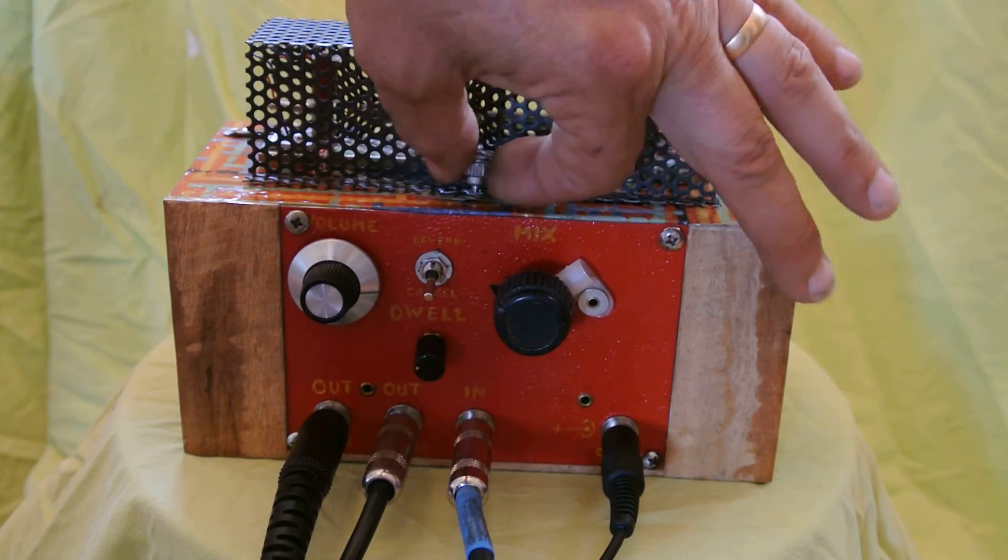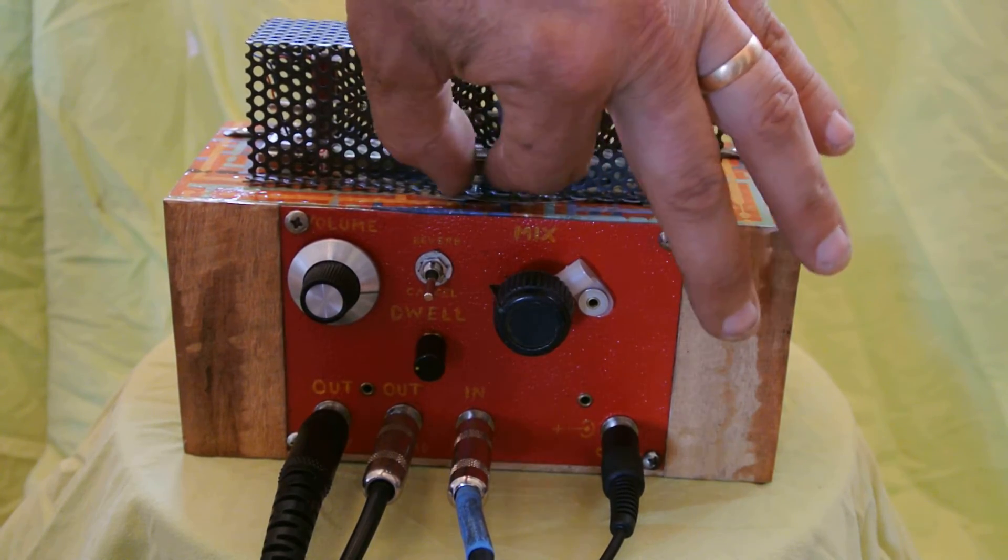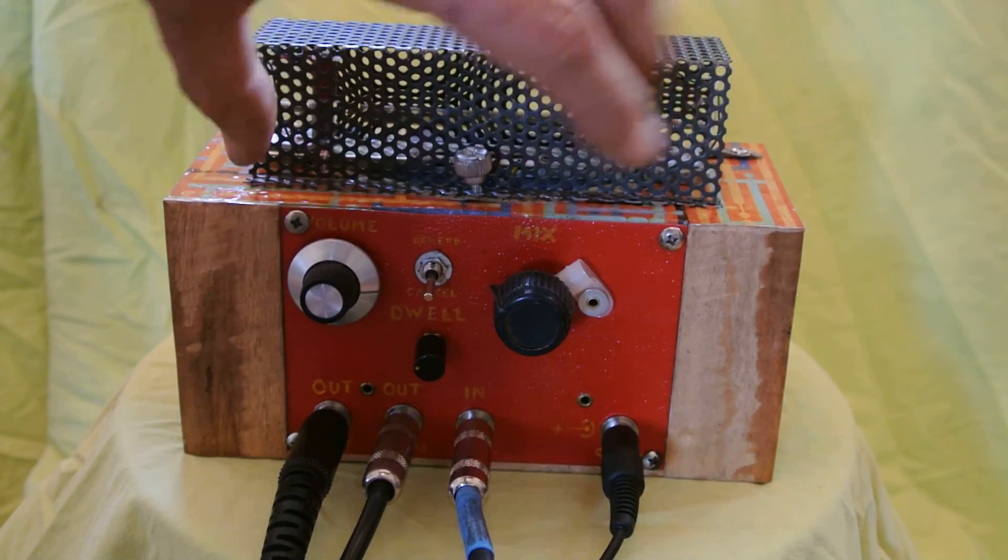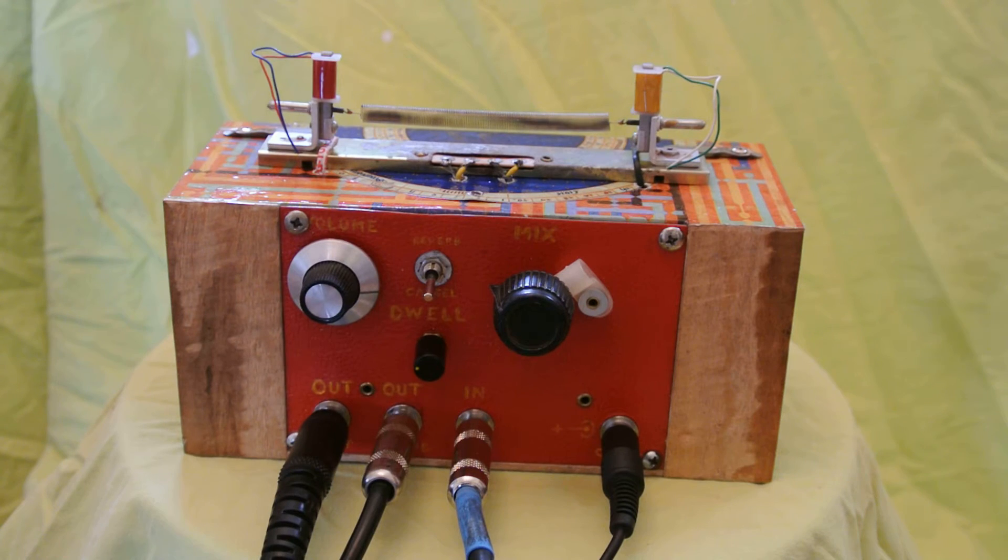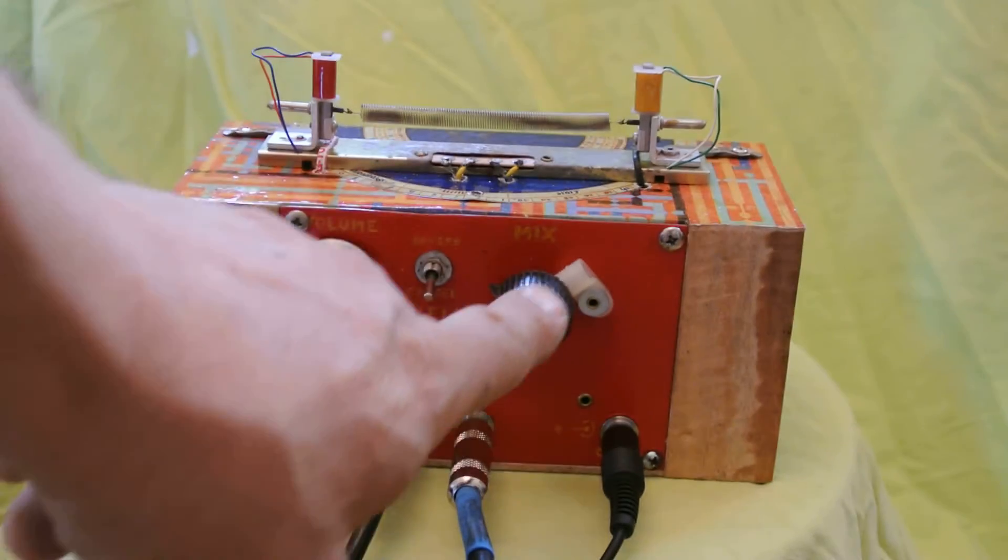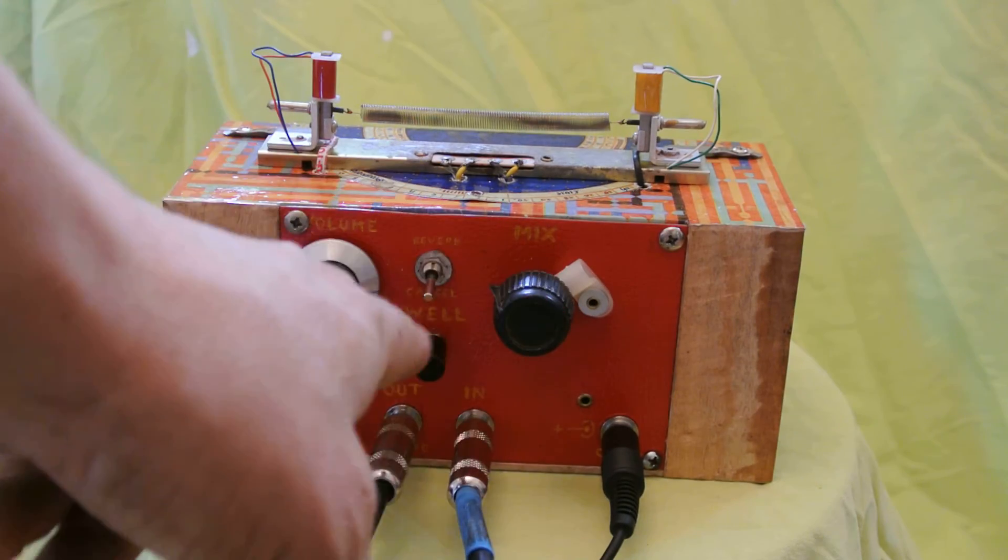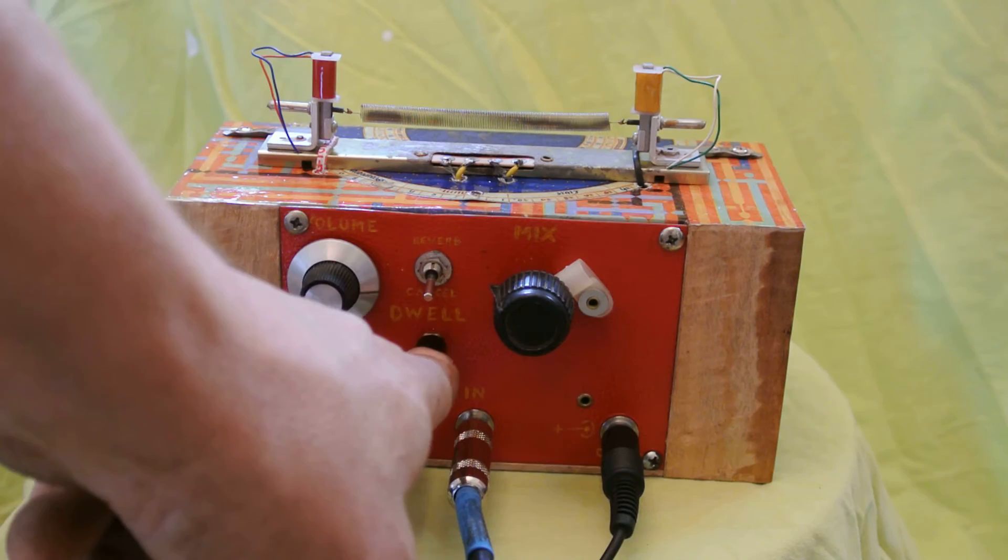We're going to take this cage off. And as you can see, it has controls for volume and mix of the reverb and dry signal. There's that spring right there. I'm going to set that on the floor. And mix, which mixes the dry signal and the wet signal.